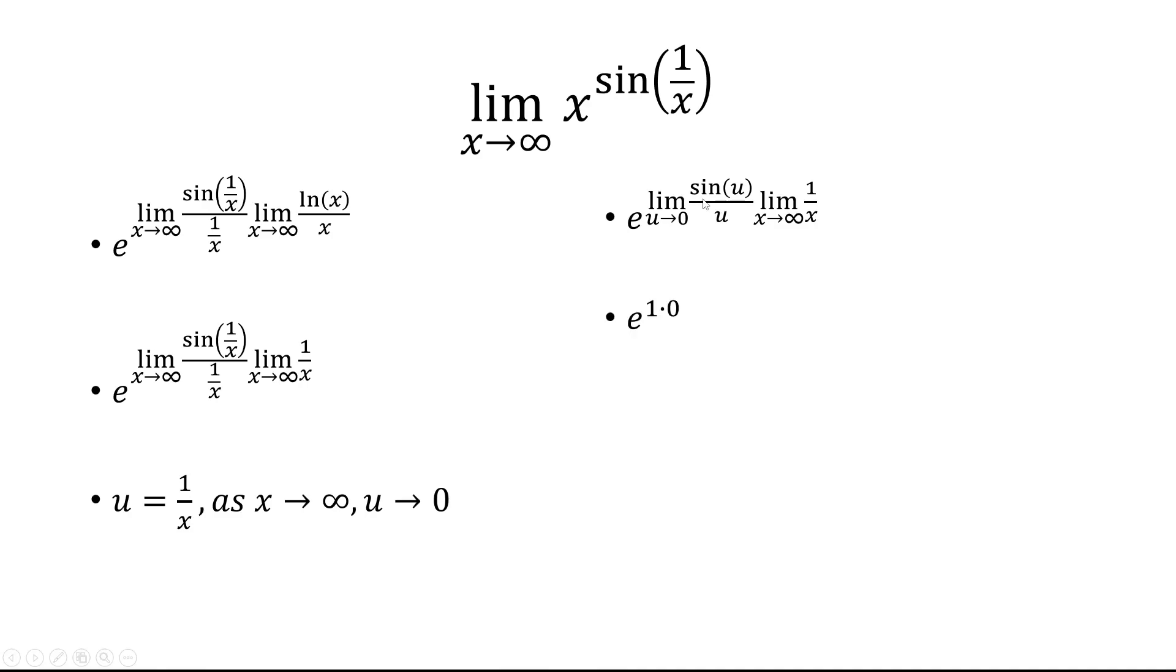So the first limit is 1, the second limit is 0. 1 times 0 is going to give us 0. We have e to the 0, and that's going to be 1. So that's going to be our final answer.